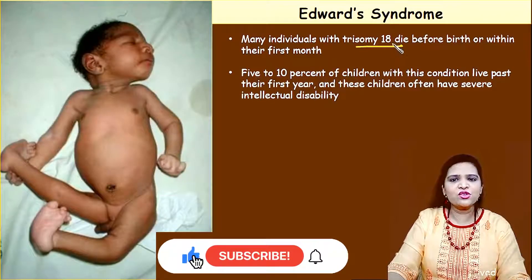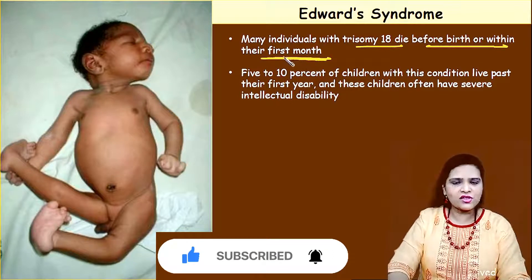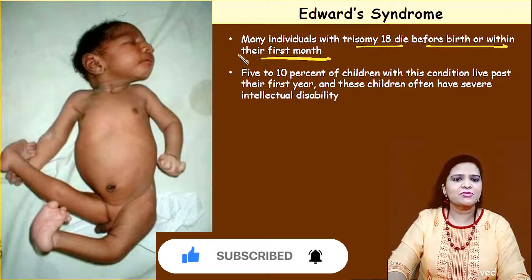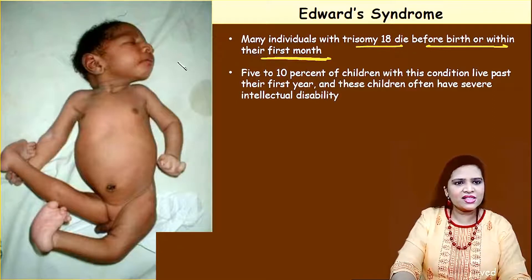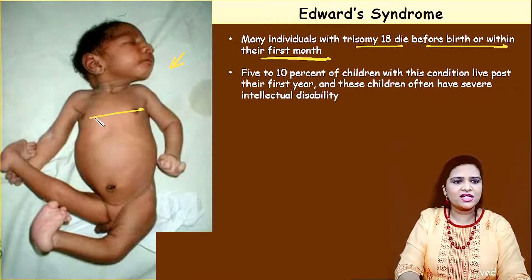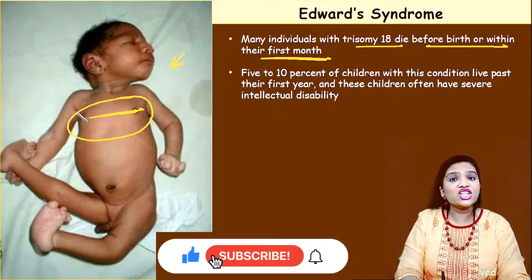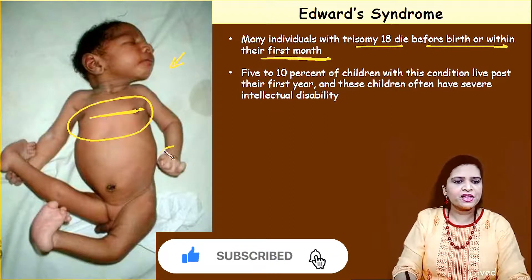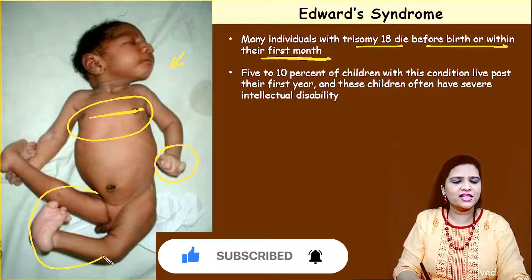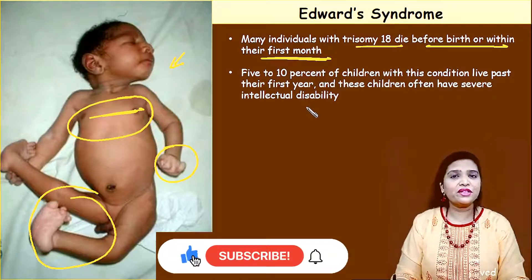Many individuals with trisomy 18 die before birth or within the first few months. The lifespan of the child is very short. Looking at this picture — the child has a shield-shaped chest, clenched fingers, and abnormal toes. Many problems are present. This is all about Edwards syndrome.